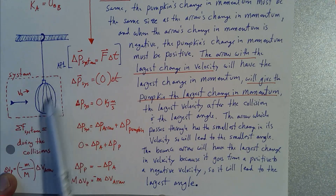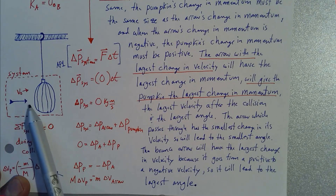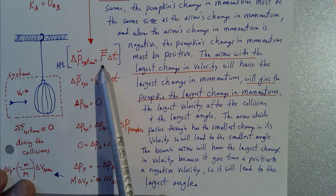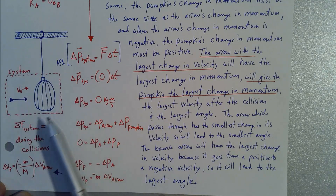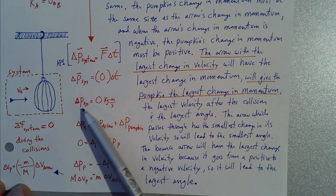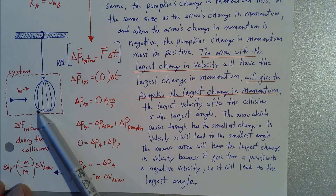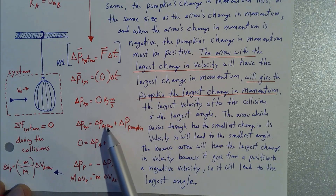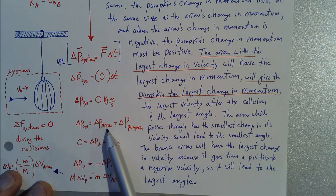Treating this as a system and thinking about force interactions, we ask whether the system as a whole changes its momentum. The impulse equation is: change in momentum equals net force times time. If we consider this as one whole system, the net force on the system is zero during any of the collisions. Zero net force means the system's momentum will not change. The change in momentum of the system equals the change in momentum of the arrow plus the change in momentum of the pumpkin.